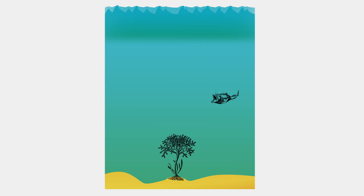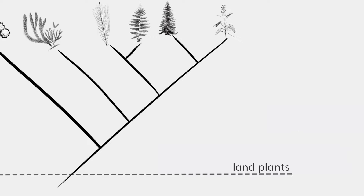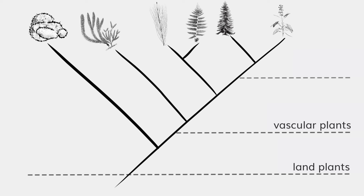This tree allows us to trace back some important events in the history of land plants: first, the emergence out of water, which characterizes all land plants; then the origin of vessels, which characterize all so-called vascular plants. This tree also allows us to show the origin of seeds, which characterize all so-called seed plants — in other words, the group that includes conifers, a number of other small plant groups, and flowering plants.